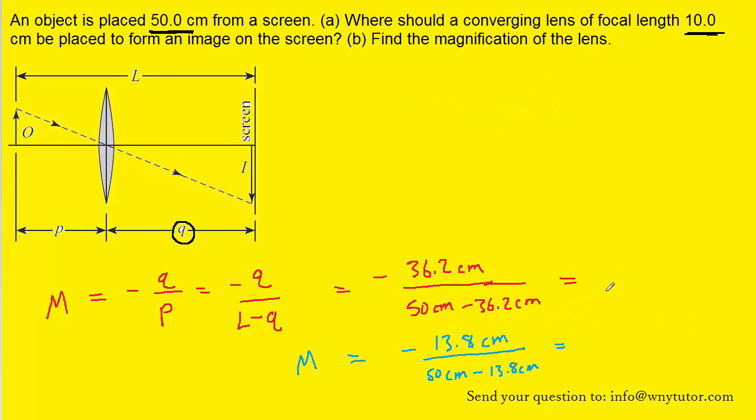And so using the larger value of Q we end up with the magnification of roughly negative 2.62. And then using the smaller value of Q we're going to end up with approximately negative 0.381. And so these are the two magnifications and the correct answers to part B.